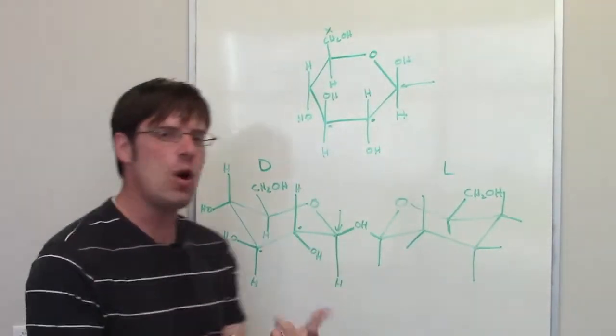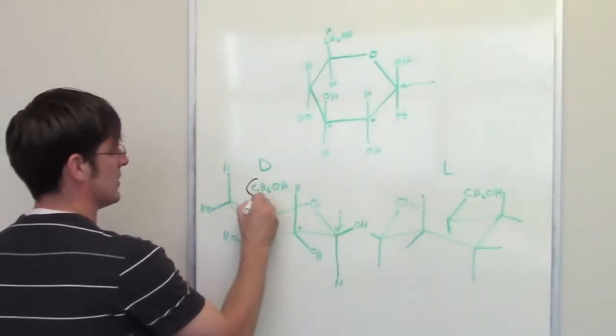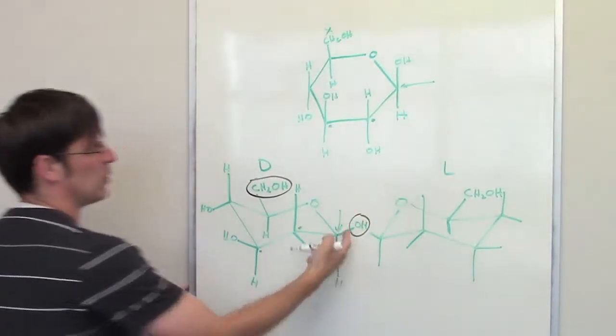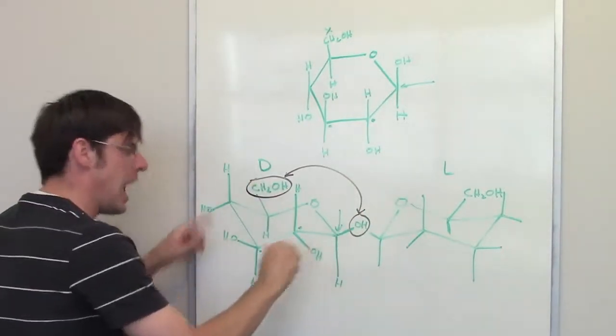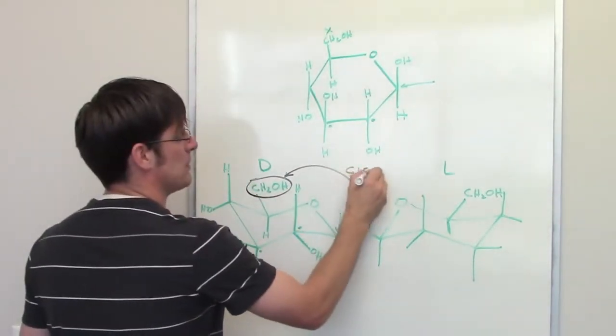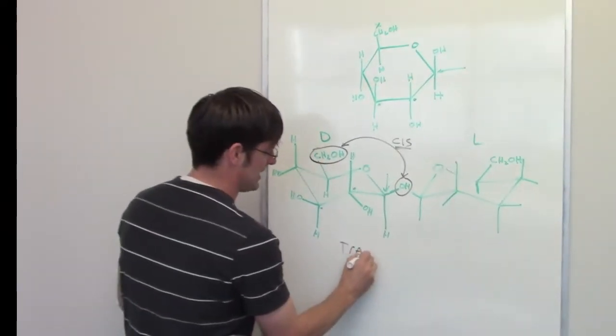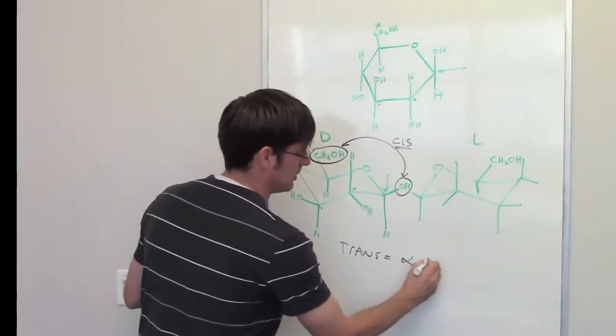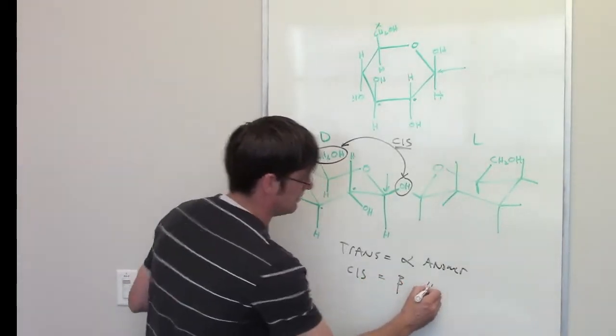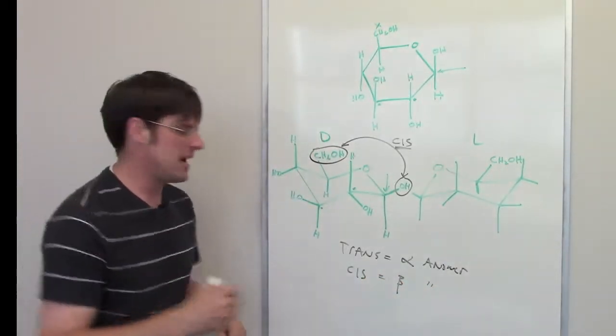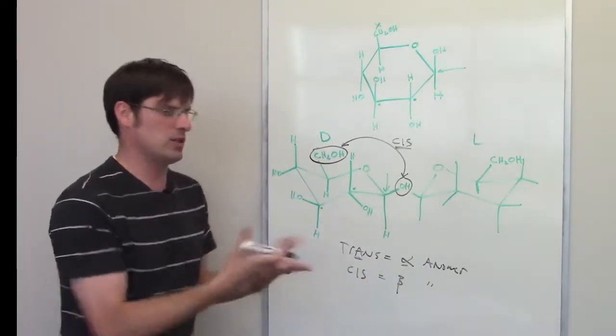So, is it an alpha D or is it a beta D? The way we decide that is by looking at the three dimensional orientation of the CH2OH and comparing it to the three dimensional orientation of the OH. You will notice that the CH2OH is pointing up and the OH is pointing up. They are both up, which means it is cis. Now, I have memorized that when these two guys are trans, that is an alpha anomer. When those two guys are cis, that is a beta anomer. The way I memorize that is that trans has a letter A in it and alpha has a letter A in it. And then cis, you know, by default just goes to beta.